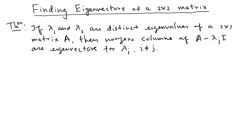So i is not equal to j. What we're going to do is subtract the other eigenvalue — the opposite eigenvalue — from the diagonal entry. Then the columns are eigenvectors. Non-zero columns, and there will be distinct eigenvalues.